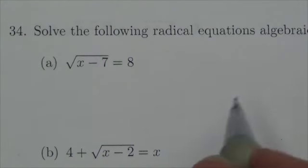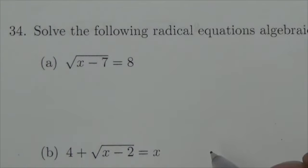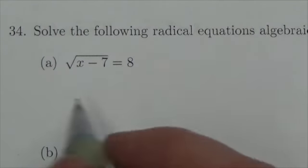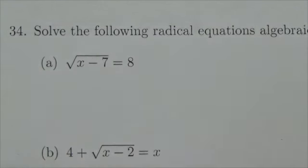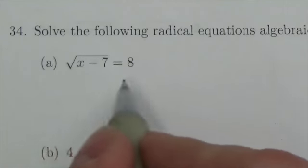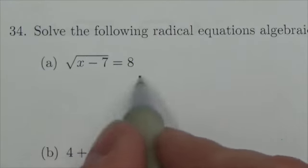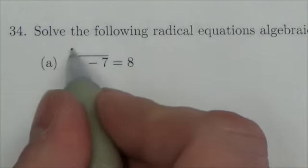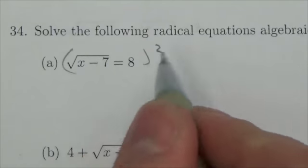Hi everybody, this is the Math 20-1 Radicals and Absolute Values Review. This is question 34A. I just have to solve these things algebraically. What I would do here is isolate the radical — it's already been done, so I'm going to square both sides.